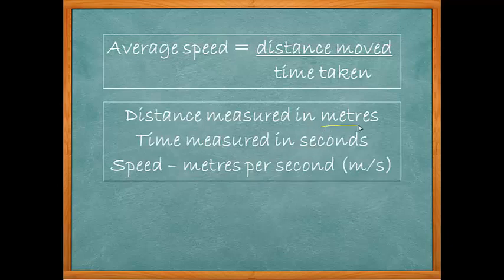Distance is normally measured in metres. Time is normally measured in seconds. And combining those we get a speed of metres per second, written as m/s. Now you may see this in certain textbooks written as ms to minus 1. It means the same thing.